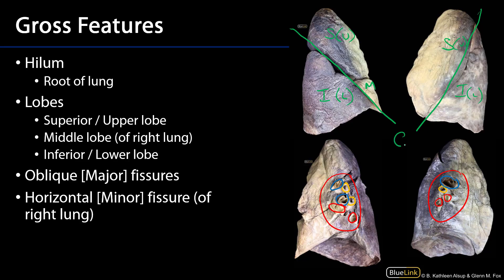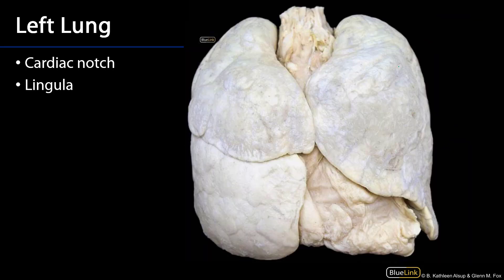The oblique fissures run obliquely and are also known as the major fissures. On the right lung there is also a horizontal fissure called the minor fissure. Unique to the left lung is the cardiac notch, which accommodates the apex of the heart. At the inferior border of the cardiac notch is a tongue-like projection called the lingula.